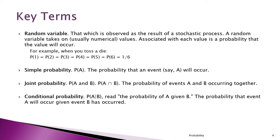We could get a one, two, three — there are six possibilities. Assuming the die is fair, they're all equally likely, so each one has a probability of one sixth.